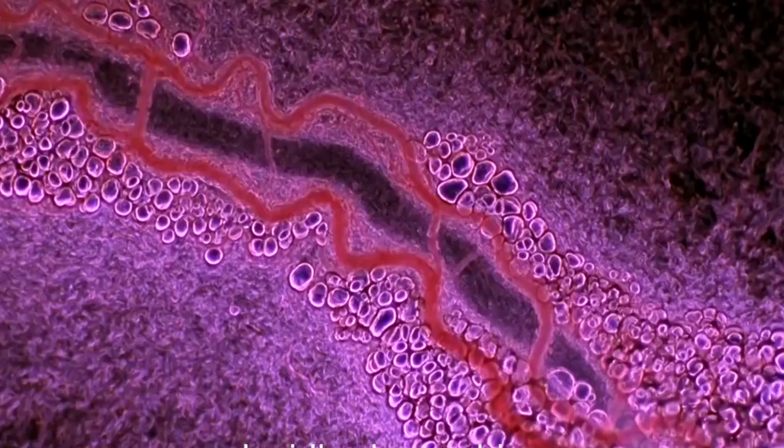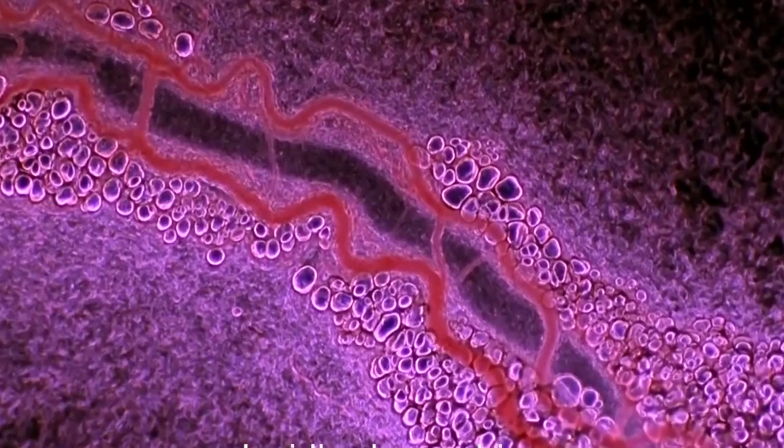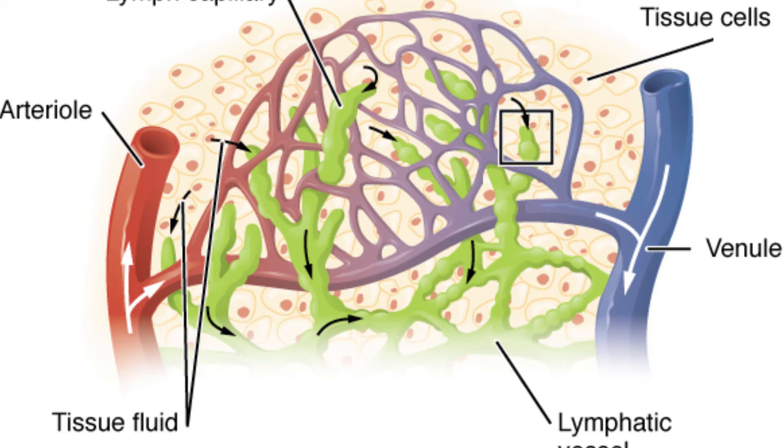However, like veins, lymphatic vessels have valves inside them to stop fluid from flowing back in the wrong direction.